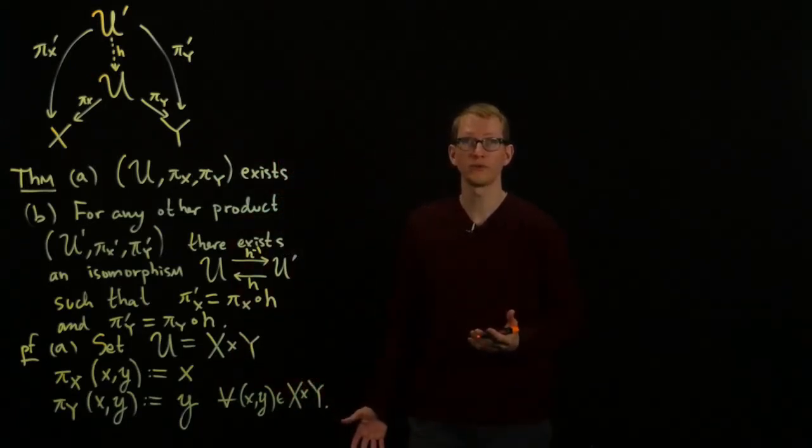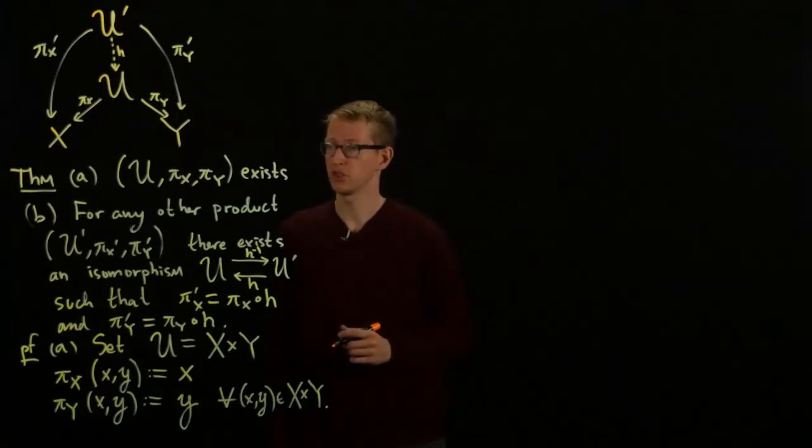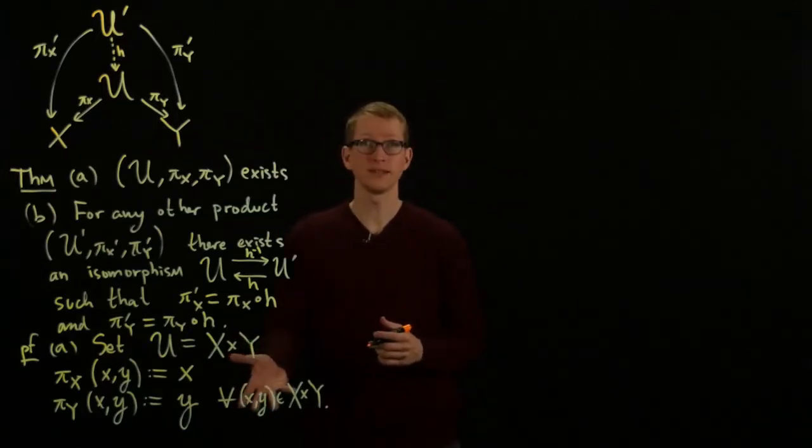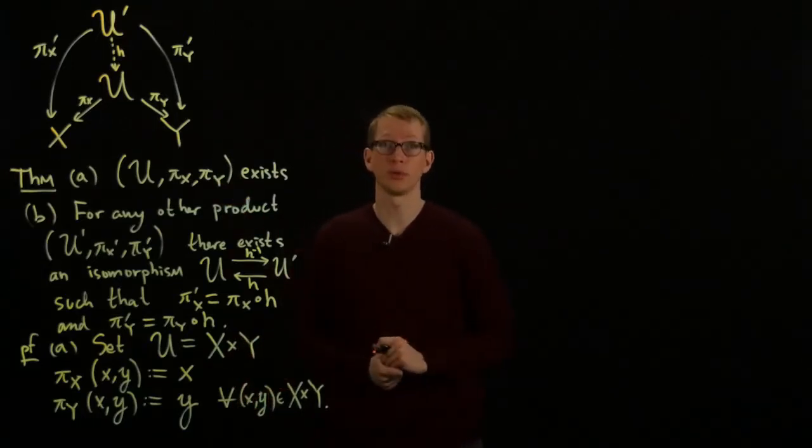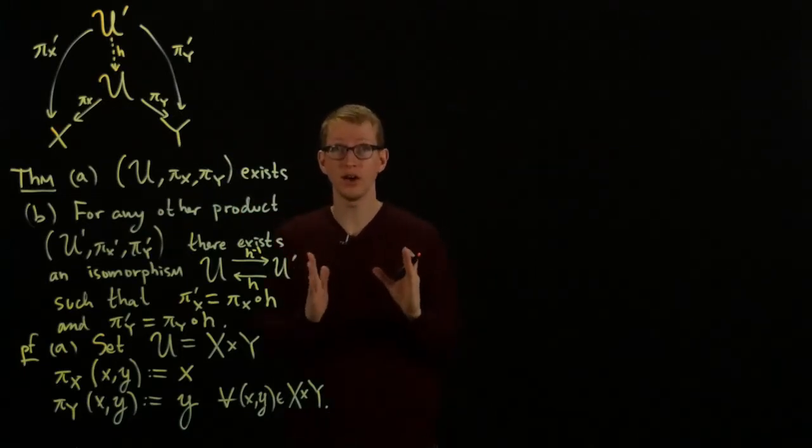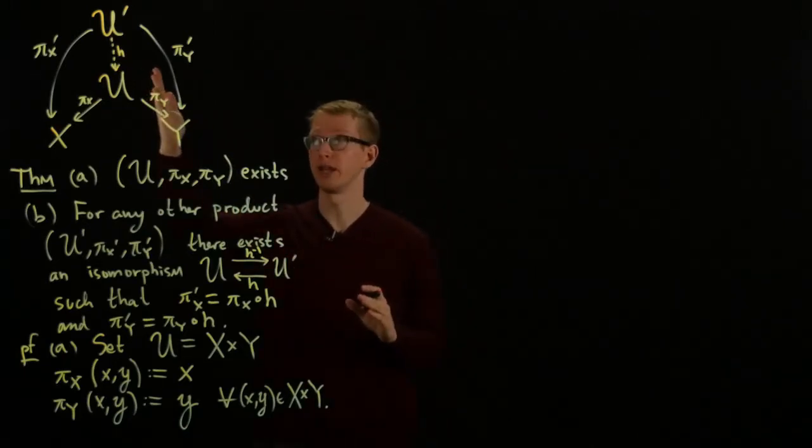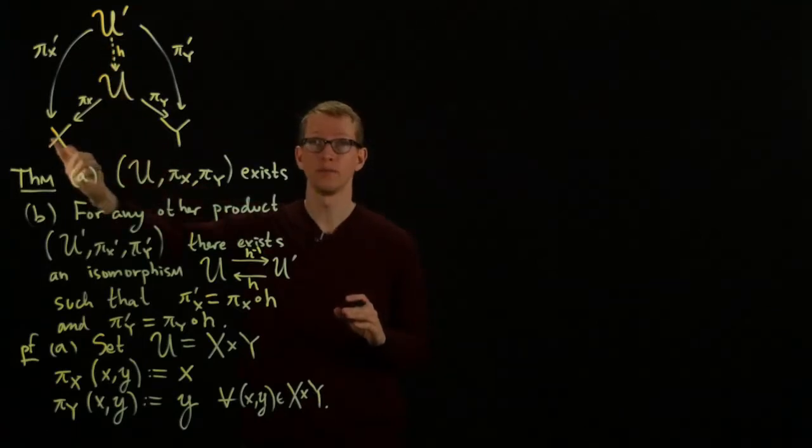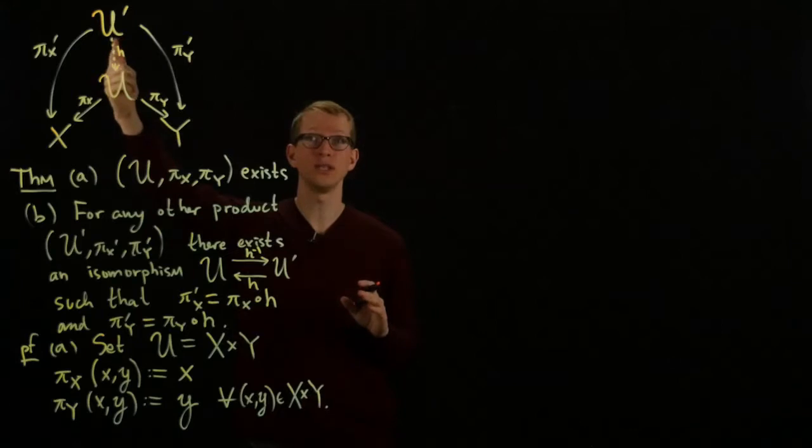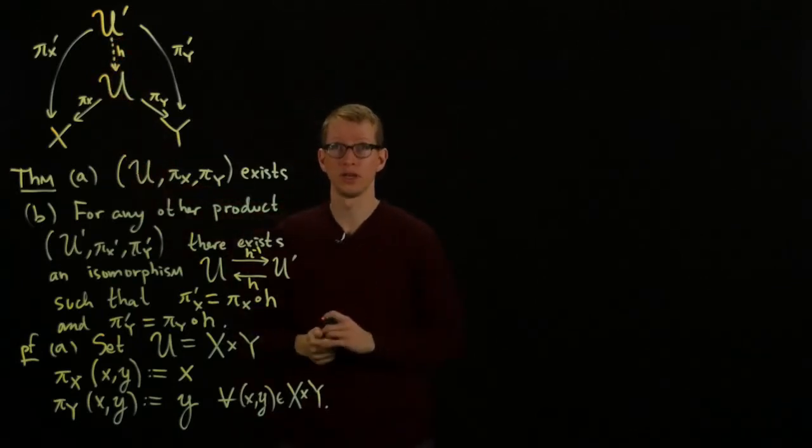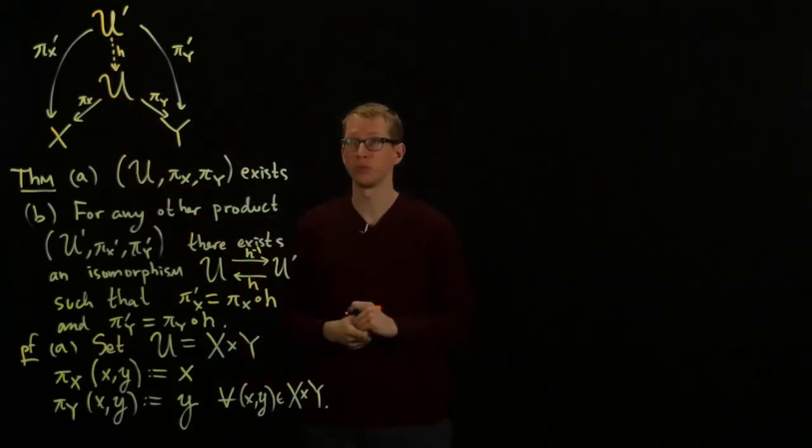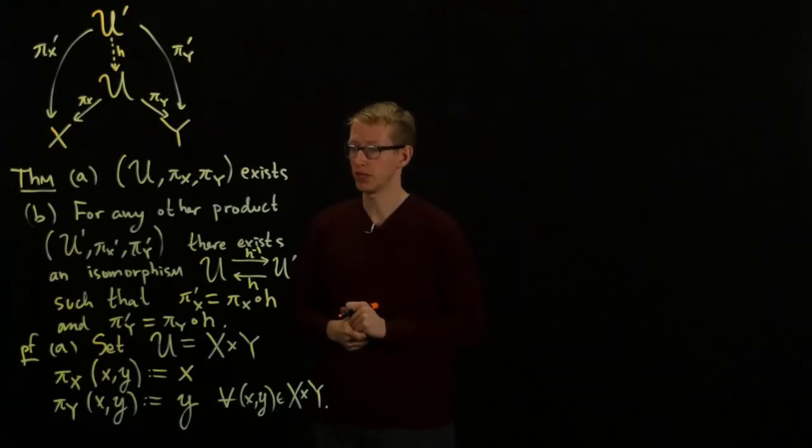Are we done with the proof? Not quite. We have to check to make sure that this satisfies this universal property, which means for any other U prime, for any other set U prime, together with maps to X and Y, we have to make sure that there exists a unique map from U prime to U. So suppose we have such a U prime and these two projection maps.